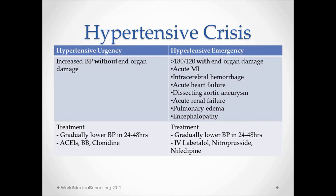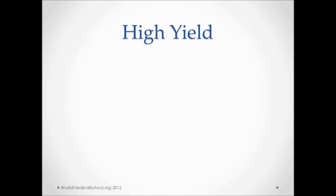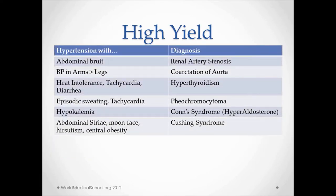To emphasize some high-yield points for board exams: Hypertension with abdominal bruit — diagnosis would be renal artery stenosis. Hypertension with blood pressure in arms greater than legs — that's coarctation of the aorta, which can also be associated with Turner syndrome. Heat intolerance, tachycardia, and diarrhea along with hypertension is seen in hyperthyroidism. Hypertension with episodic sweating and tachycardia can be seen in pheochromocytoma. Hypertension with hypokalemia is classic for Conn syndrome or hyperaldosteronism. Hypertension with abdominal striae, moon face, hirsutism, and central obesity is seen in Cushing syndrome.